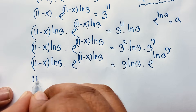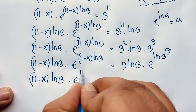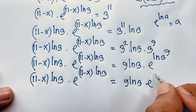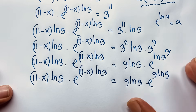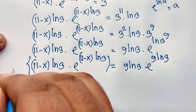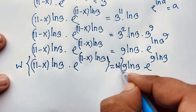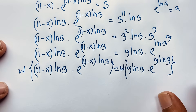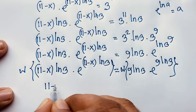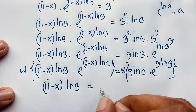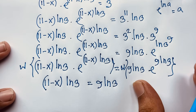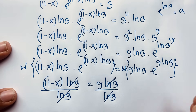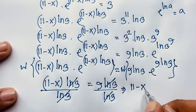Now here again: 11 minus x times ln 3, e to the power (11 minus x times ln 3), equals 9 ln 3 times e to the power 9 ln 3. Now I apply the Lambert W function — W(a · e to the power a) equals a. So this expression gives: 11 minus x times ln 3 equals 9 ln 3. Now if I divide both sides by ln 3, the ln 3 terms cancel, and we find: 11 minus x is equal to 9.